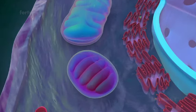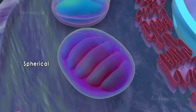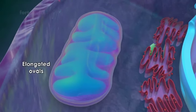Mitochondria vary in shape from almost spherical to elongated ovals.